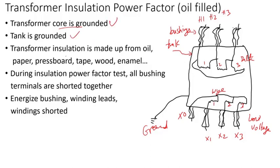This shows the windings in a core form, where the windings are concentric and wound around the core, so the core would be grounded. The transformer insulation is made up of oil — for oil-filled transformers — paper, pressboard, tape, wood, and enamel on the conductor. There are many types of insulation, all required for insulation purposes.